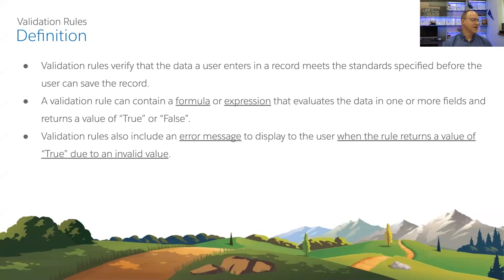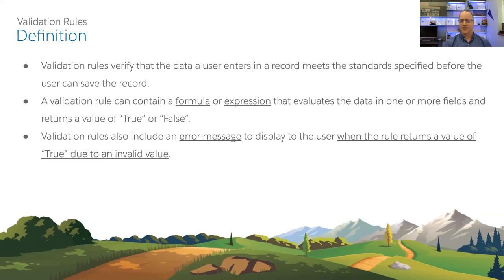This is the part that often gets confusing: validation rules include an error message to display to the user when the rule returns true — meaning an invalid value. So the expression has to be false in order for the record to save without an error — if it evaluates to true, the error message displays.